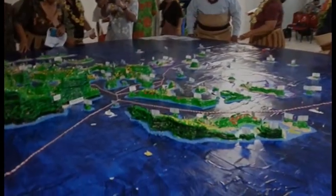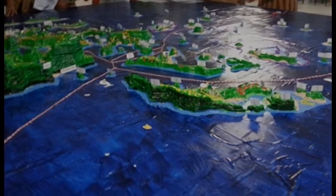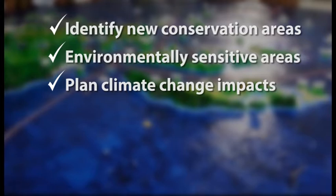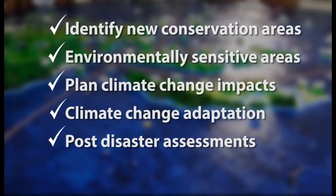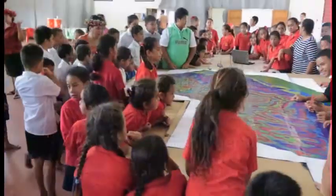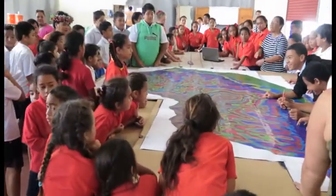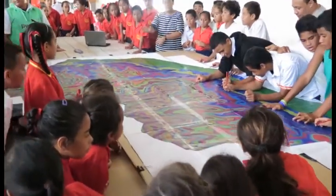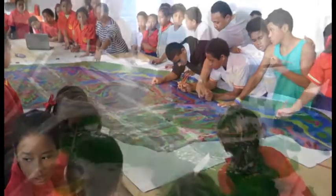The 3D model is a multi-use tool that can be used for the identification of new conservation areas, environmentally sensitive areas, planning for climate change impacts, climate change adaptation, post-disaster assessments, disaster risk reduction and others.